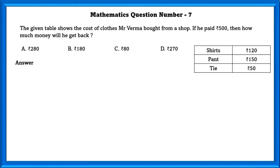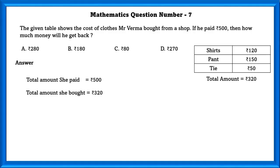Mathematics question number 7. The given table shows the cost of clothes Mr. Veera bought from a shop. If he paid rupees 500, find how much money he will get back. The total amount he spent is 320. He paid 500, so the amount he gets back is 500 minus 320, which equals 180 rupees.